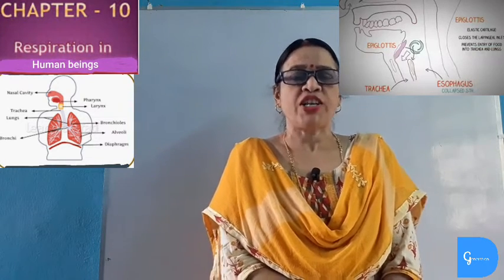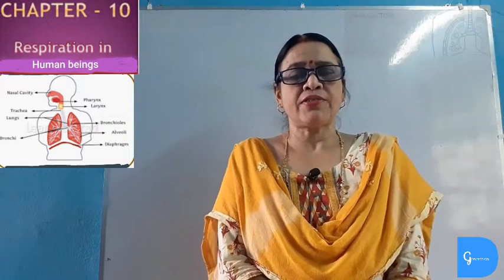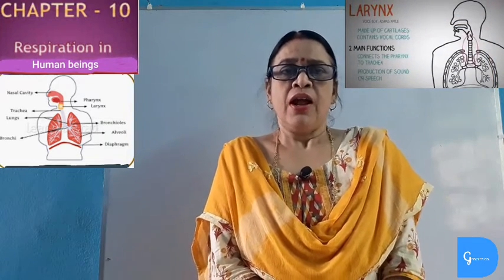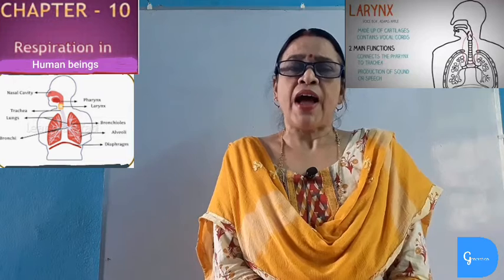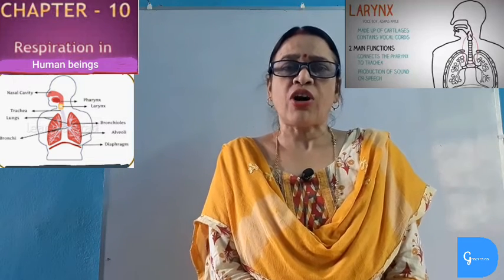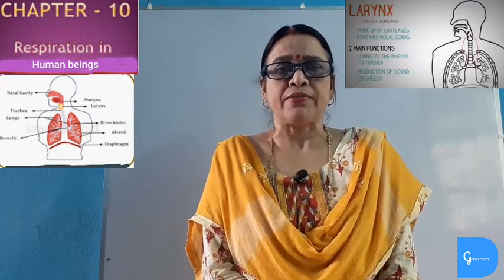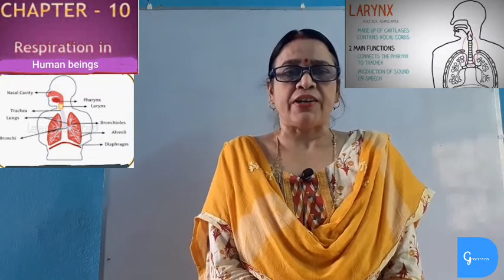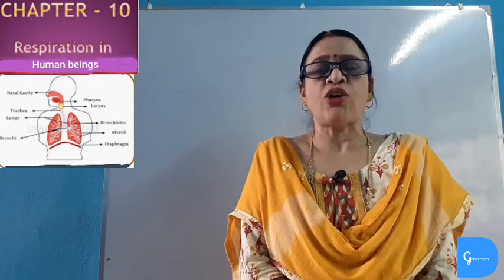Next comes the larynx, or voice box. Larynx is a cartilaginous structure that leads to the trachea and is also known as Adam's apple. It contains vocal cords and thus helps in speaking. The larynx is present at the top of the trachea.